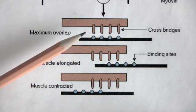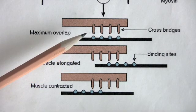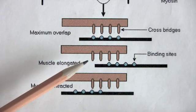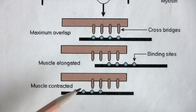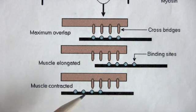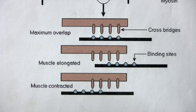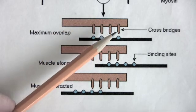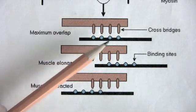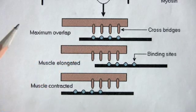How many cross bridges are bound to the binding sites in the first example? Four. How many are bound if the muscle begins its contraction in the second state? Two. Likewise, if the muscle is already partially contracted when the contraction begins, again two binding sites are bound to cross bridges. Which one will give the greatest strength of contraction? Like people pulling on a rope, the more cross bridges that are available and bound to binding sites, the greater the strength of contraction.